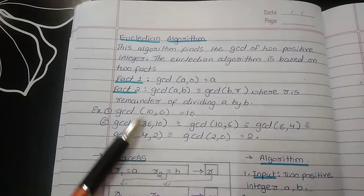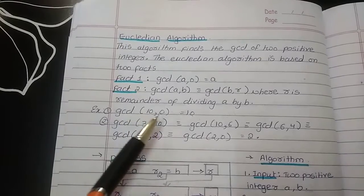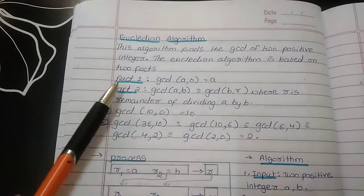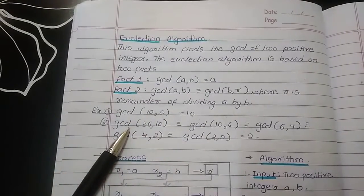These are the two examples for both the facts I have taken. GCD of 10, 0 is 10 according to fact 1.